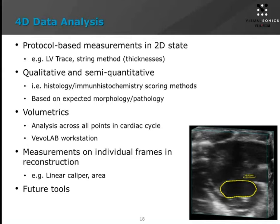On the VivoLab workstation, you've got the ability to, in a reconstructed state, do volumetric analysis — looking at an analysis of volumes across all points in the cardiac cycle and getting an assessment of change in volume over change in time. You can also do measurements on individual frames, such as an area measurement in the left atria in that reconstructed state. We are working with some of our key customers on what future analysis tools would be, and we're eager to get this 4D data acquisition out there, get it in the hands of users, and develop more measurements and tools to help in your research.